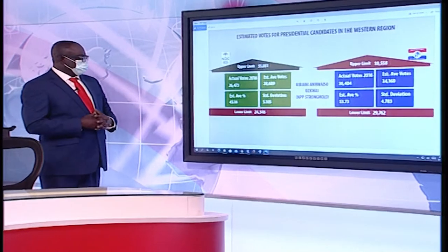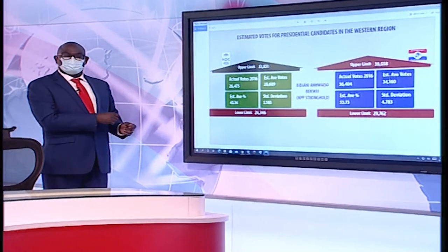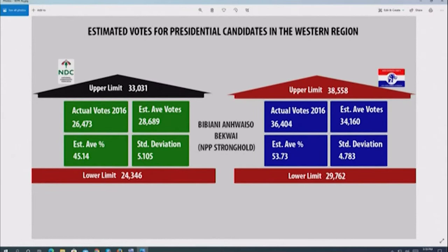Bibiani Amienso Bekwai is another NPP stronghold with an estimated average of 53.73%, translating to 34,000 plus votes. They actually had 36,000 plus — deepening their lead by 2,000 votes. NDC at 45.14% translates to 28,000, but they actually had 26,000, dropping about 2,000 votes. Those 2,000 votes appear to have gone to NPP.